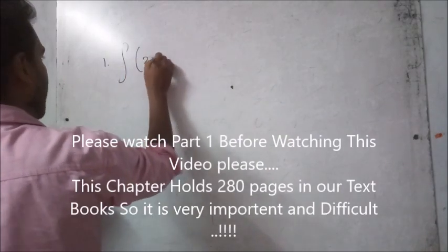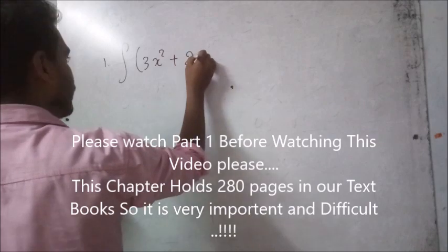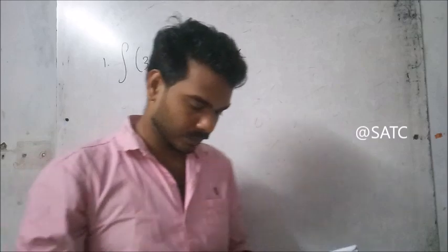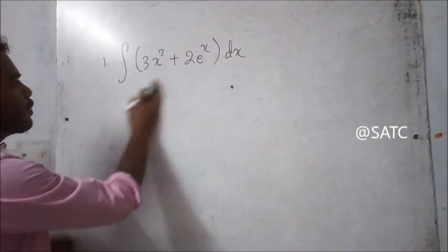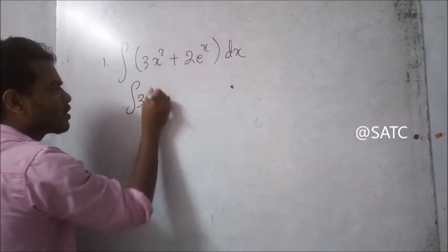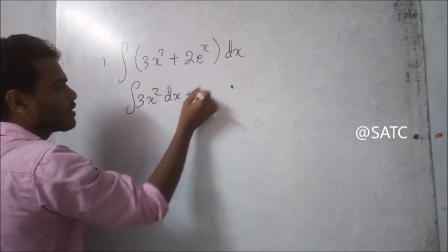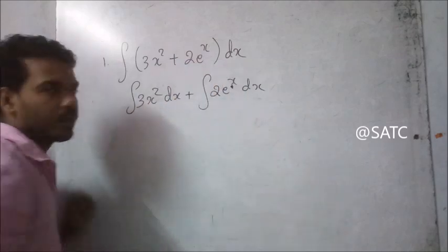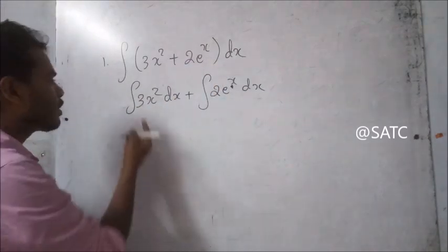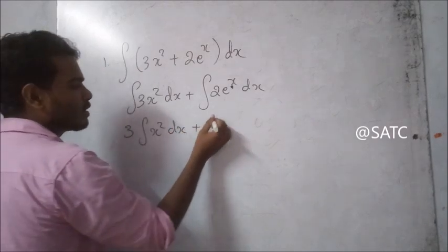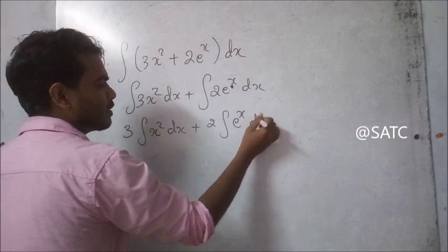We need to find the integral of 3x squared plus 2e raised to x dx. We can split this as: integral of 3x squared dx plus integral of 2e raised to x dx.